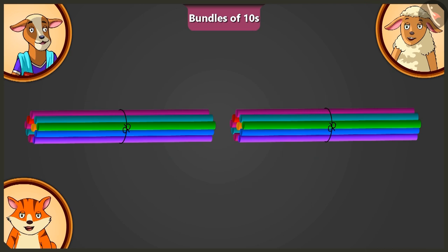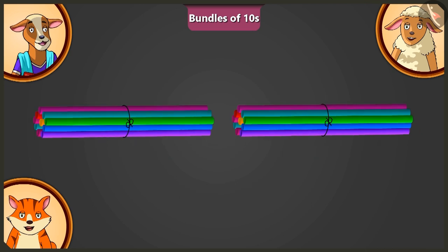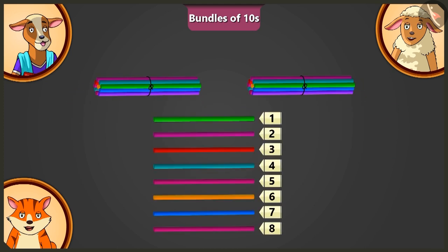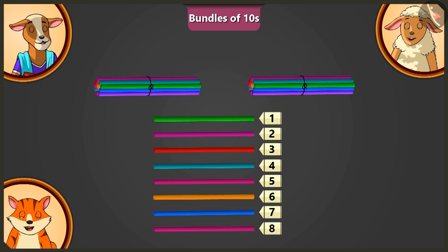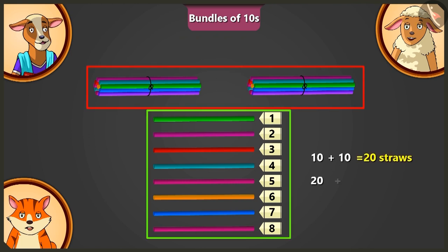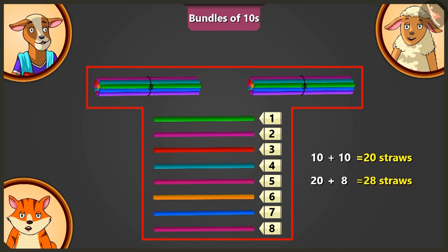Look, Pilly, I am putting these 8 straws next to both the bundles. Now, tell me, how many straws are there in total? Adding 10 straws to 10 straws makes 20 straws, and adding 8 to 20 straws, there are 28 straws in total.